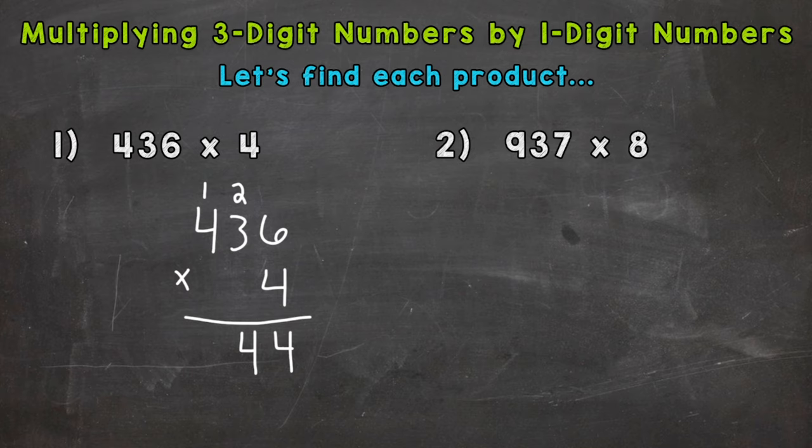Now we're doing 4 times 4. Really it's 4 times 400 because that 4 is in the hundreds place and gives that 4 a value of 400 but we can think of it as just the plain digits of 4 times 4. So 4 times 4 is 16 plus that 1 is 17.